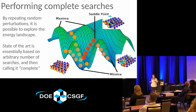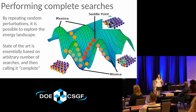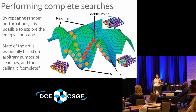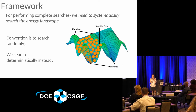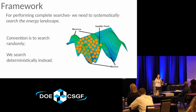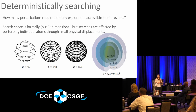However, this method doesn't tell us when we're finished — whether or not we've found all the events — and doesn't help us determine whether we found the same event more than once. To calculate residence times, we need a quantitative way of ensuring the energy landscape search is complete. We spent quite a bit of time developing a framework to ensure we had completely searched an unknown energy landscape. Instead of a random set of perturbations, we realized we need to deterministically search the accessible space, which involves choosing a perturbation mesh of appropriate density to access all events.